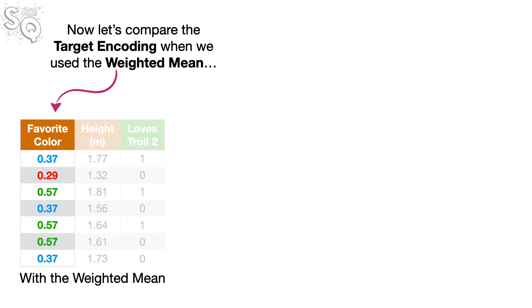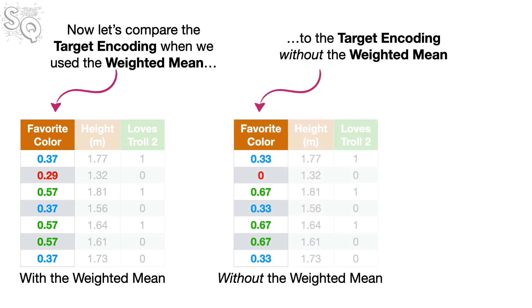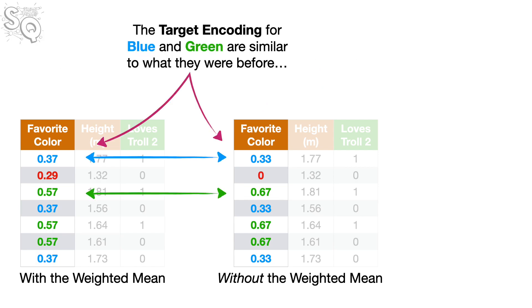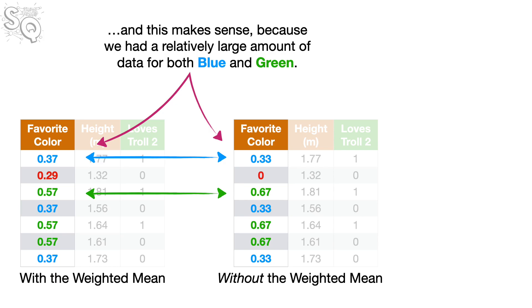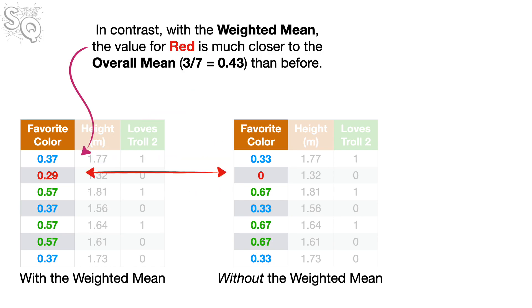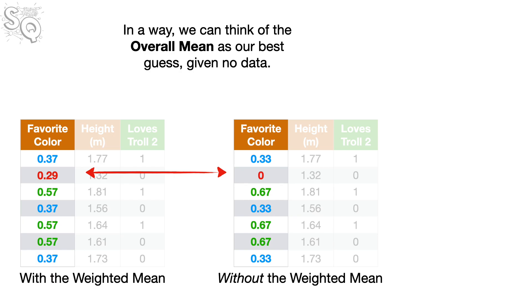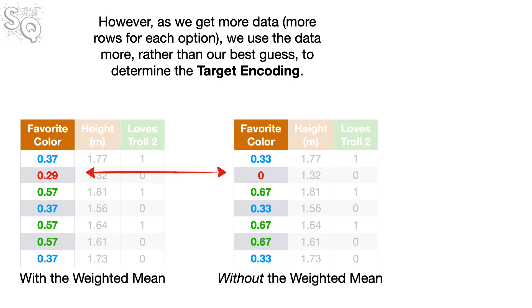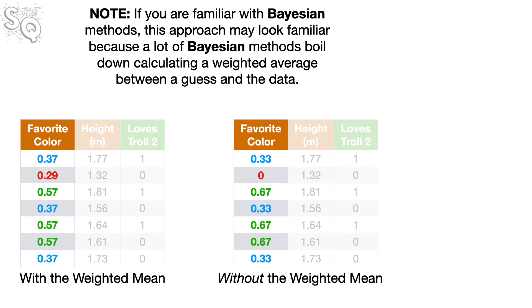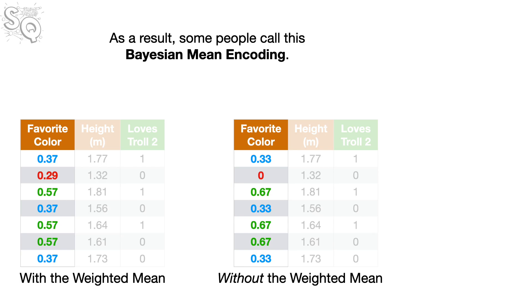Now let's compare the target encoding when we use the weighted mean to the target encoding without the weighted mean. The target encoding for blue and green are similar to what they were before, and this makes sense because we had a relatively large amount of data for both blue and green. In contrast, with the weighted mean, the value for red is much closer to the overall mean than before. And this also makes sense because we have so little data for red — only one row. In a way, we can think of the overall mean as our best guess given no data. However, as we get more data, more rows for each option, we use the data more rather than our best guess to determine the target encoding. If you're familiar with Bayesian methods, this approach may look familiar because a lot of Bayesian methods boil down to calculating a weighted average between a guess and the data. As a result, some people call this Bayesian mean encoding.